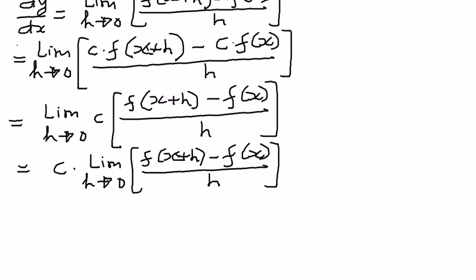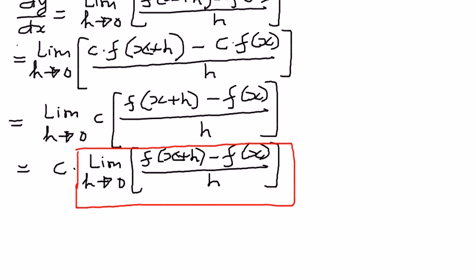So therefore, this whole thing is, in fact, the first derivative definition. If we recall, that is the first derivative definition. So we can write this as equal to c times f prime of x.